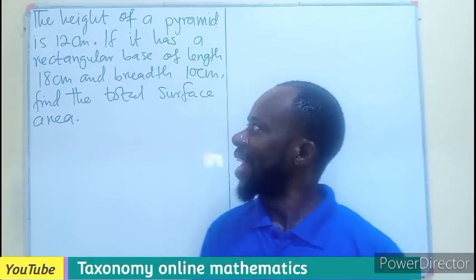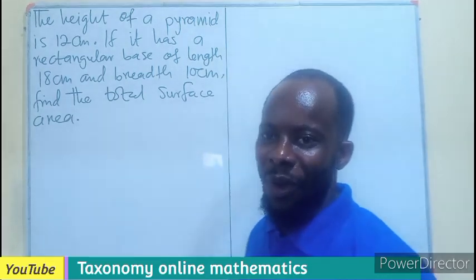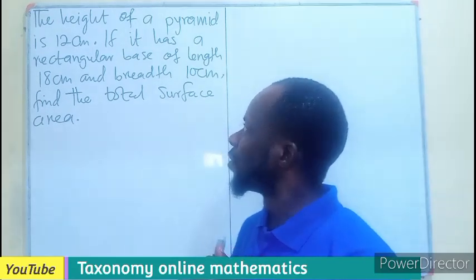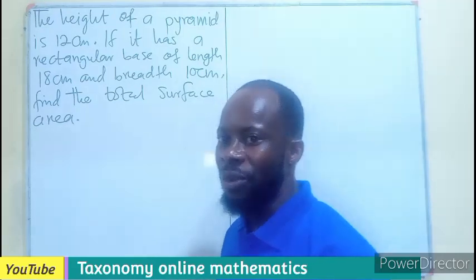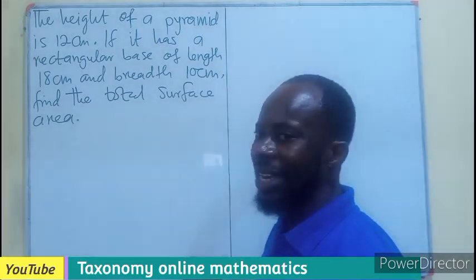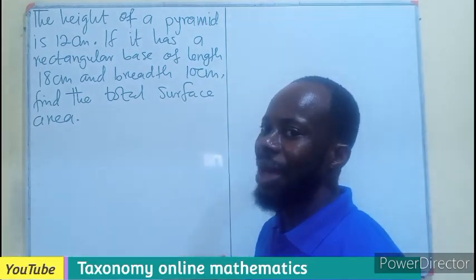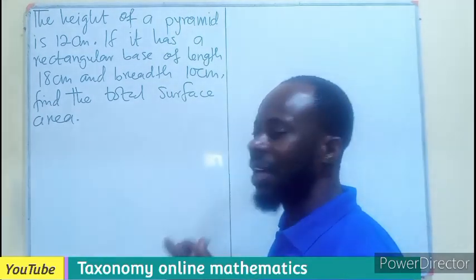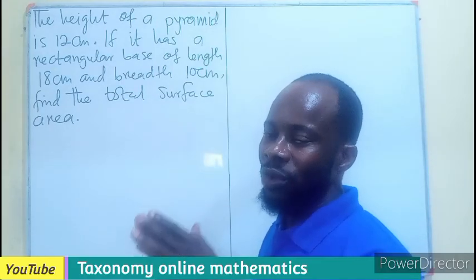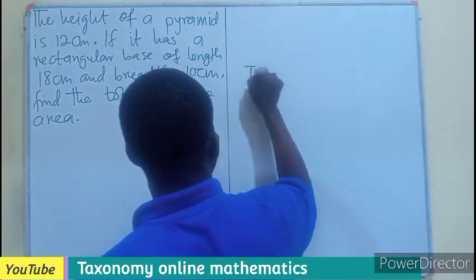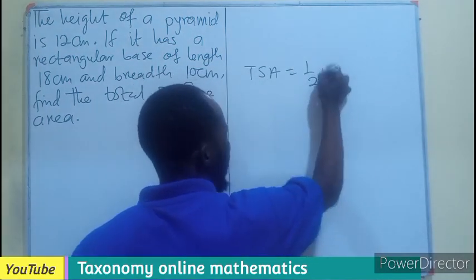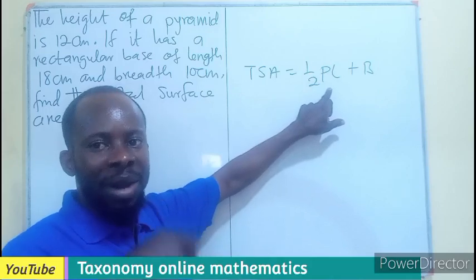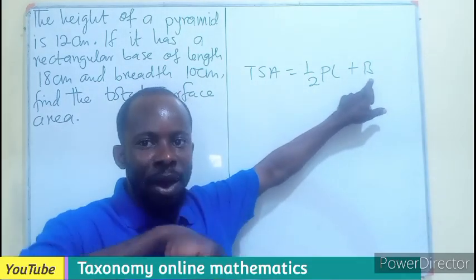Hello, welcome. Let's answer this question on the total surface area of a pyramid. This example is different from what we did in the previous episode. The height of a pyramid is 12 centimeters, it has a rectangular base of length 18 centimeters and breadth 10 centimeters. Find the total surface area. Following the previous method, total surface area equals half of the perimeter times the slant height, plus the base area.